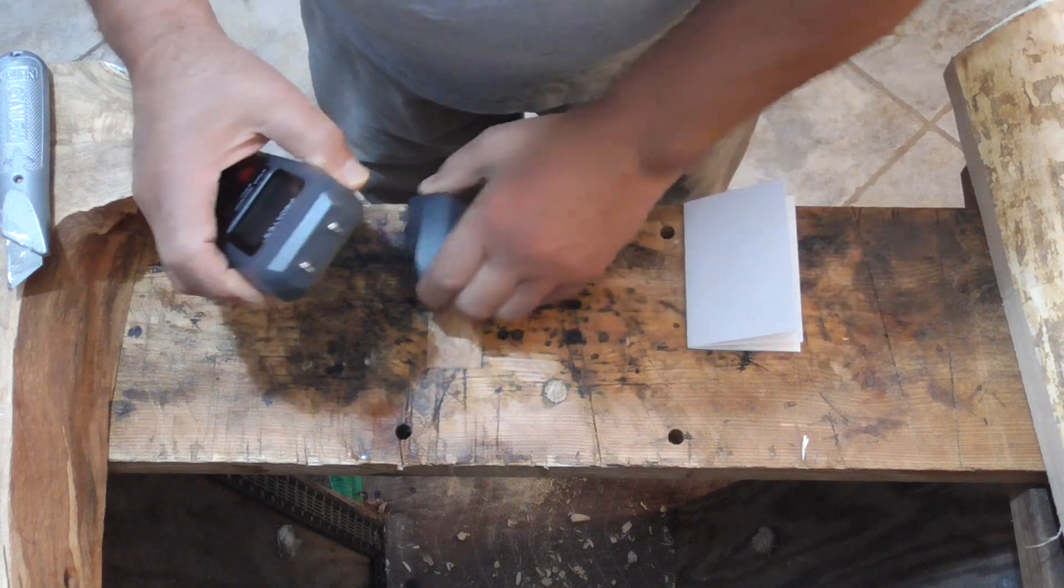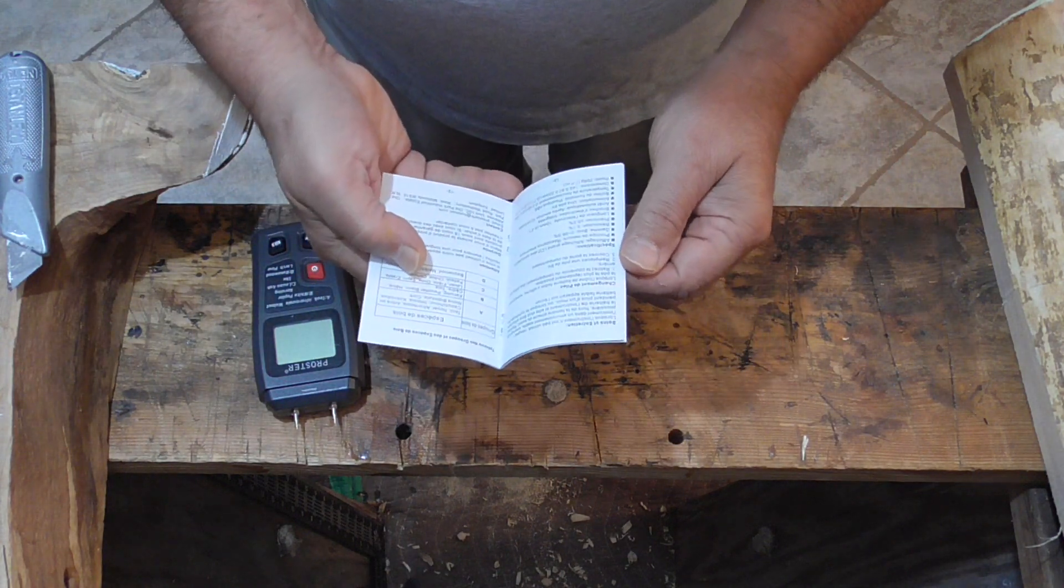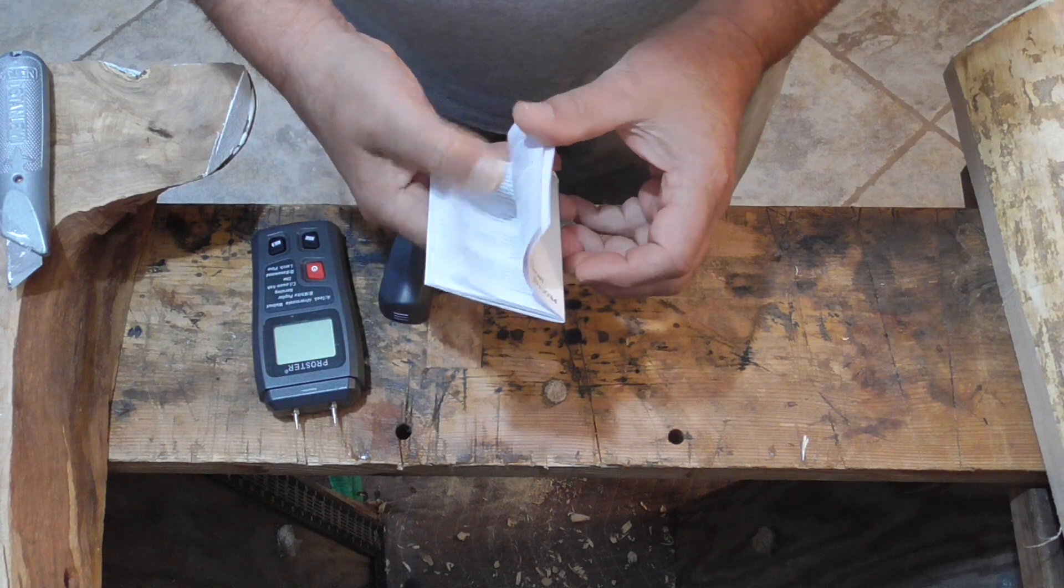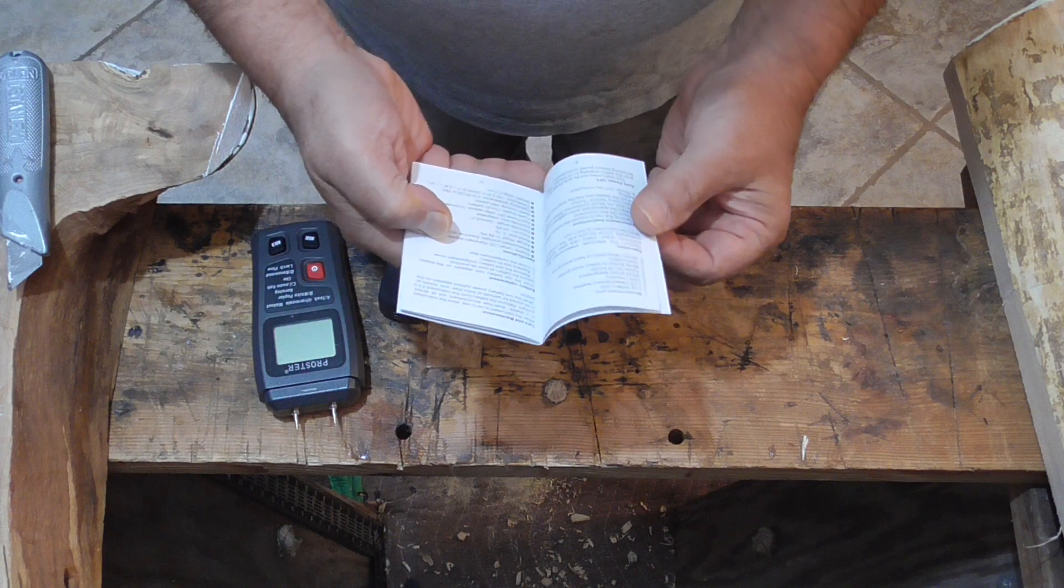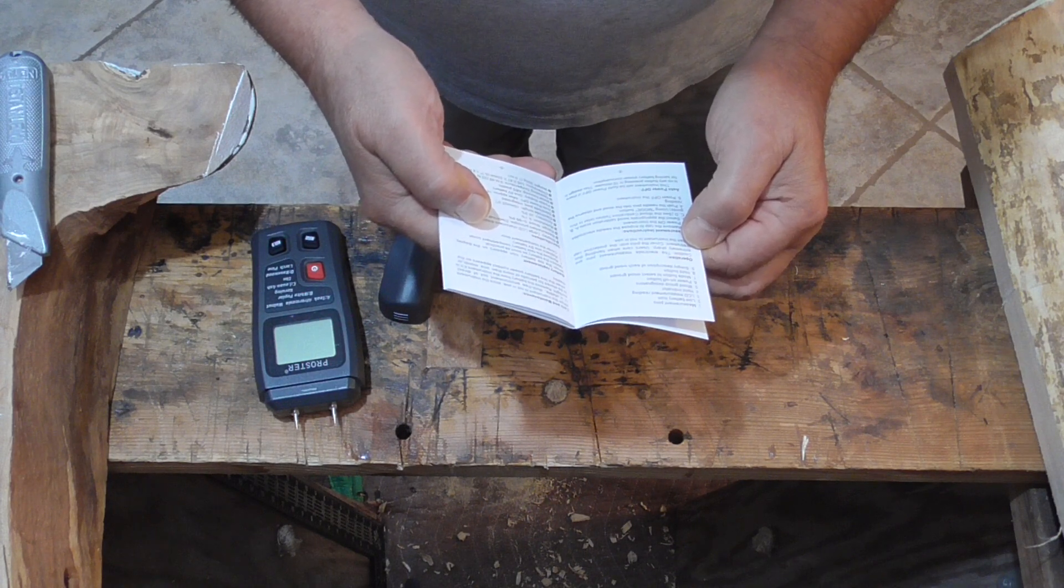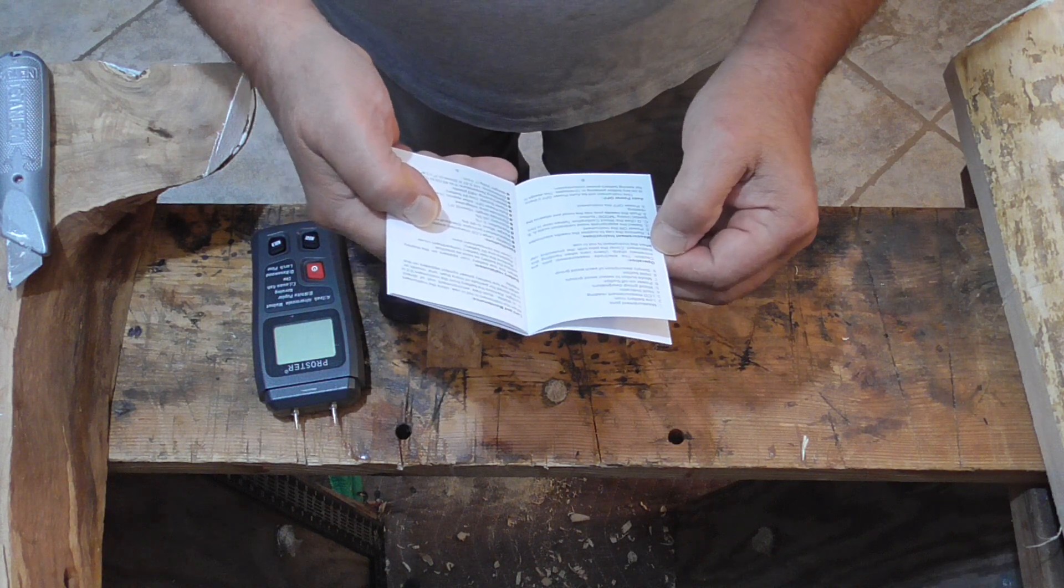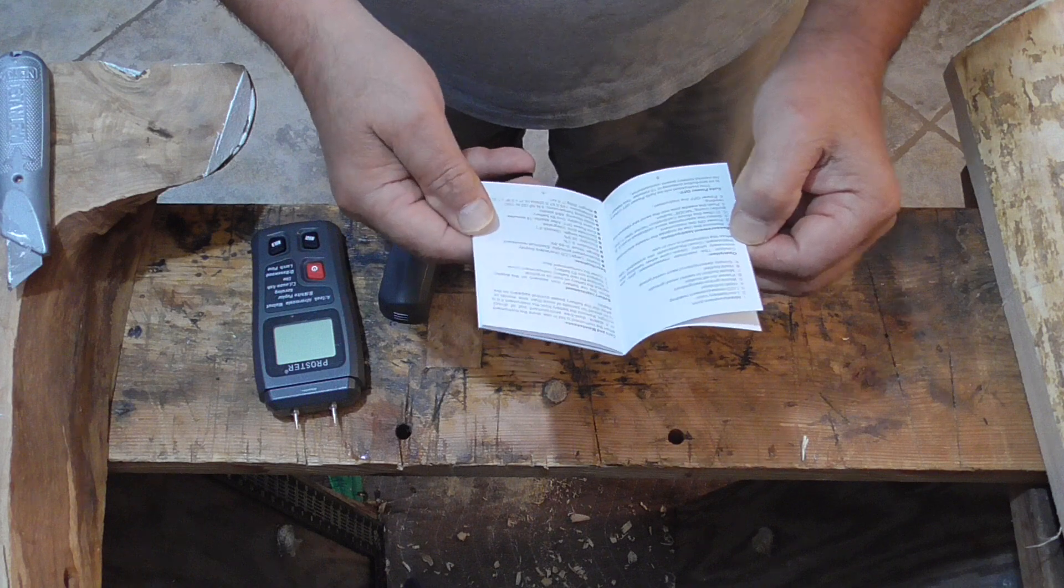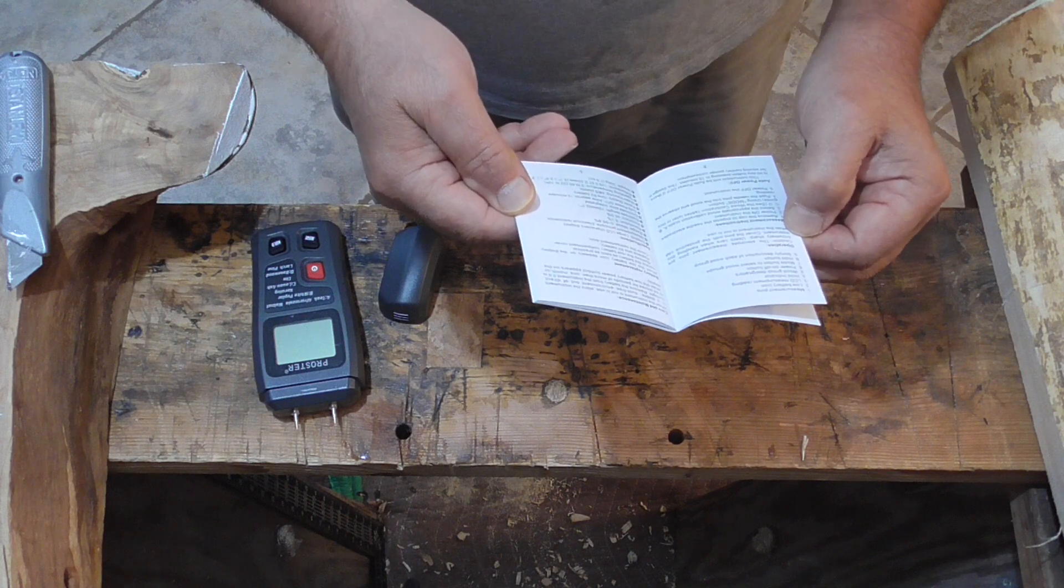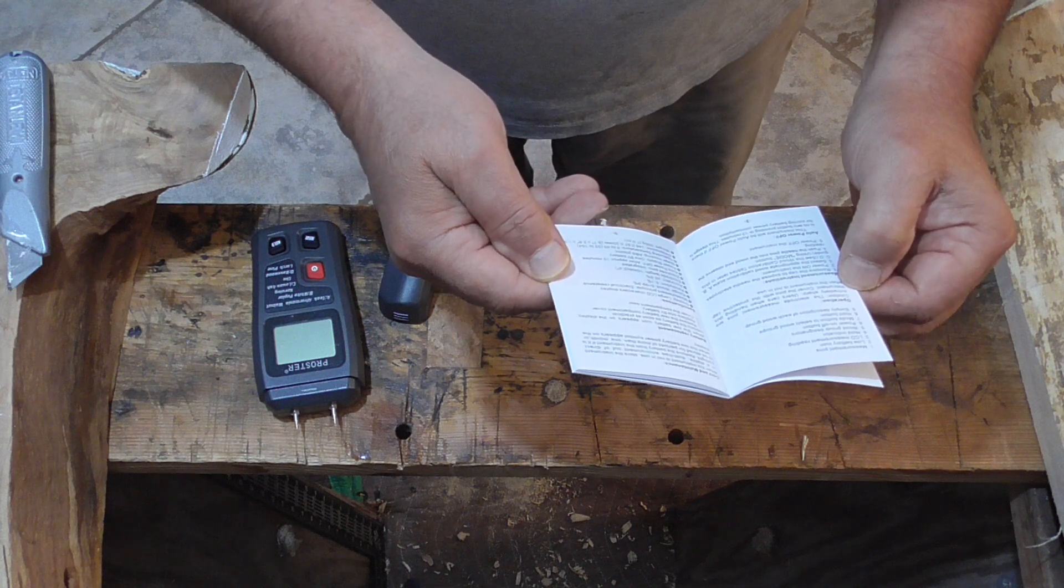There are probably some probes under here. Let's see how you use it. It's pretty simple: expose the pins, turn the instrument on, select the appropriate mode, which in this case is C, push the pins into the wood, and observe the reading.